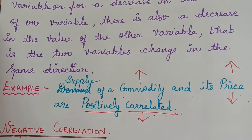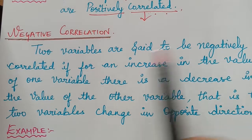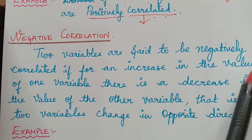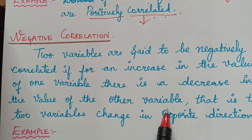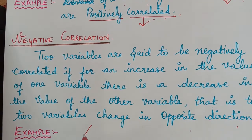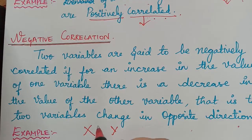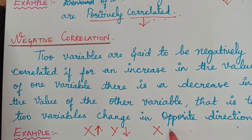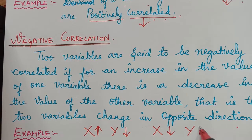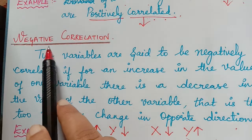Next, the definition of negative correlation: two variables are said to be negatively correlated if for an increase in the value of one variable there is a decrease in the value of the other variable — that is, the two variables change in opposite directions. If we consider variables x and y, when the value of x increases the value of y will decrease, and in such a case the correlation is said to be negative.